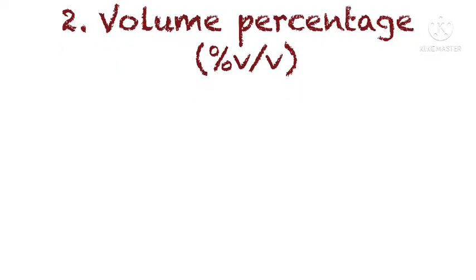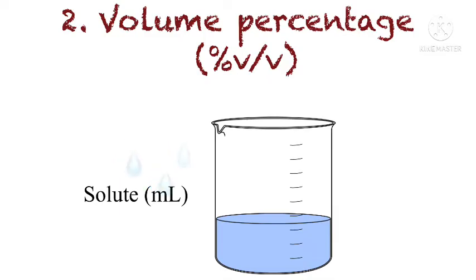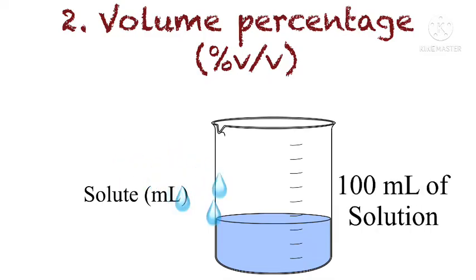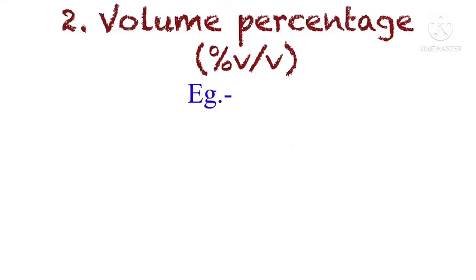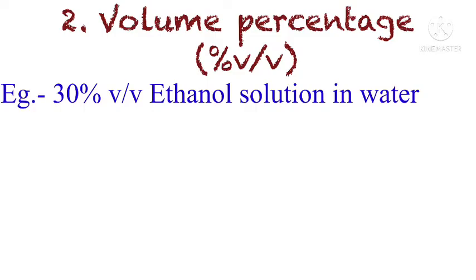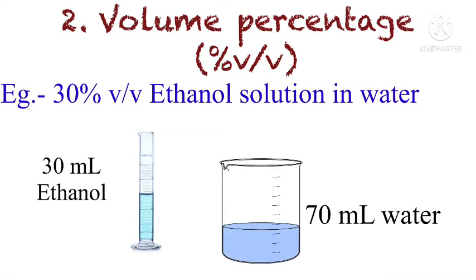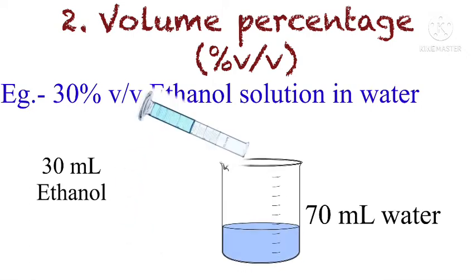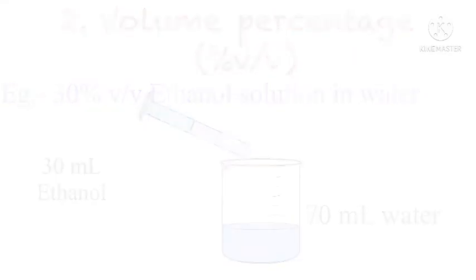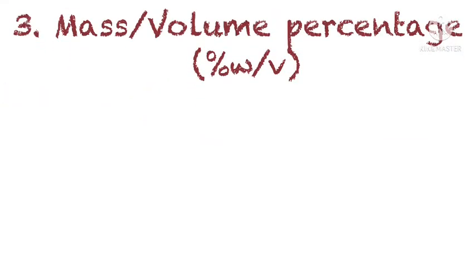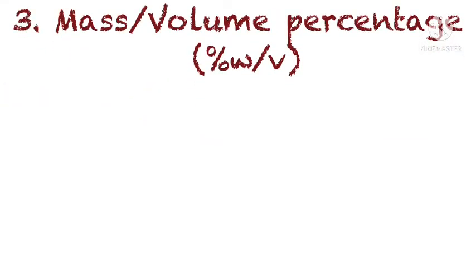The second type is volume percentage, represented by percent volume by volume (% v/v). It is the amount of solute in ml present in 100 ml of solution, where both solute and solvent are measured in milliliters. For example, to prepare a 30% v/v ethanol solution in water, we take 30 ml of ethanol and add it to 70 ml of water.